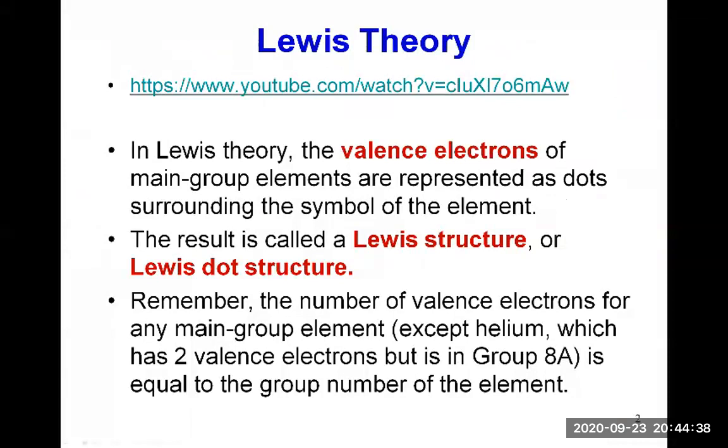So, in the Lewis theory, the valence electrons of the main group elements are represented as dots, surrounding the symbol of the element. And so, the result is called a Lewis structure or a Lewis dot structure. So, it's only the valence electrons that are drawn. And remember that the number of valence electrons for any main group elements, except helium, which has two valence electrons but is in group 8A, the number of valence electrons is equal to the group number of the element for those A groups.